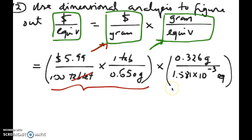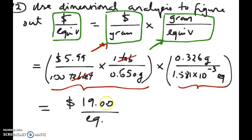From my equivalents calculation earlier, I have this many equivalents coming from 0.326 grams of tablet. If I multiply all of these quantities together using dimensional analysis, my final unit would look like dollars per equivalent. If I do that, I get $19 per equivalent.